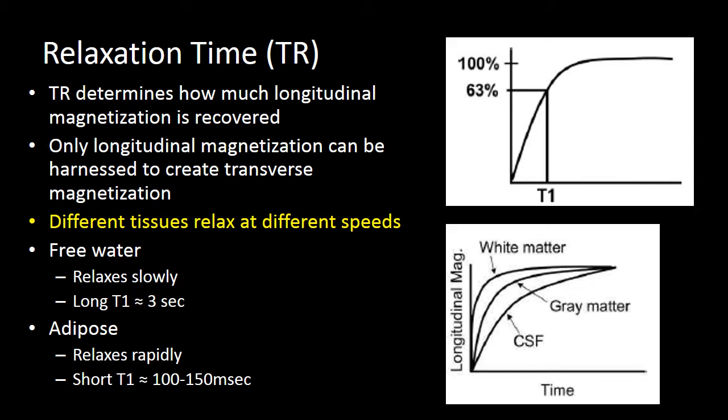When we think about the importance of our relaxation time, or TR, we can think of TR as how much time we allow the tissue to recover before we re-excite it with another RF pulse. Our RF pulse can only harness longitudinal magnetization to create transverse magnetization. Since different tissues relax at different speeds, depending on how long you've let them recover, different tissues will have a different degree of longitudinal magnetization when you apply that RF pulse, and so they'll contribute differently to signal.